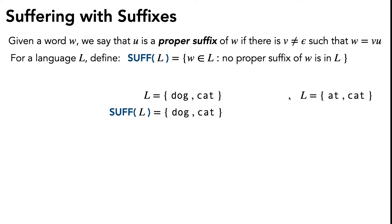What about if L equals {at, cat}? Then SUFF(L) would just be the string {at}, because at doesn't have any proper suffixes of it in L, but cat has the proper suffix at, so at effectively eliminates cat from being in SUFF(L).